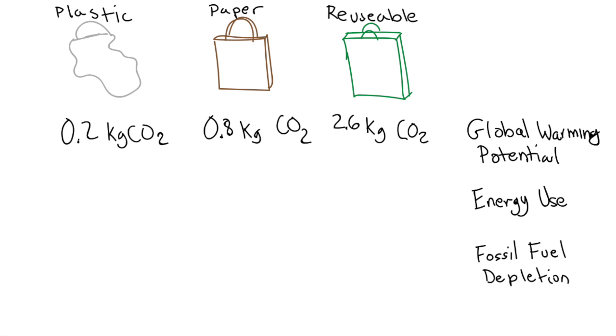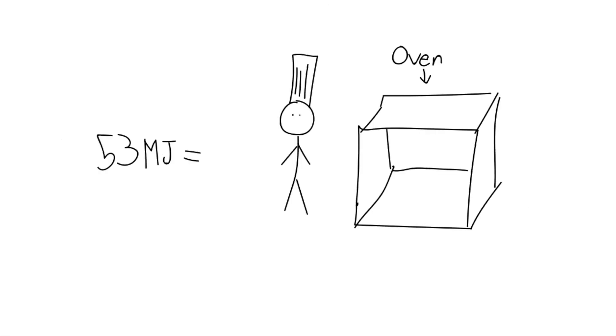The amount of energy it takes to make a plastic bag is 5 megajoules. Paper takes 23 megajoules, and a reusable bag takes 53 megajoules. For perspective, 53 megajoules is the amount of energy it takes to overcook your 20-pound Thanksgiving turkey by 30 minutes or so, making it just slightly too dry for your mother-in-law to approve.